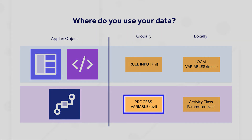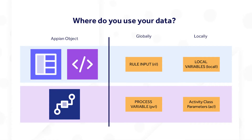Process variables are the process model counterparts to rule inputs, which allow passing data into, through, and out of a process model. In a process model, process variables are defined so that data can be transferred between nodes. A process variable can be defined as a process parameter to allow passing a value when starting a process — for example, values from a start form or a parent process.